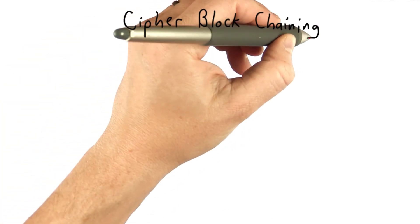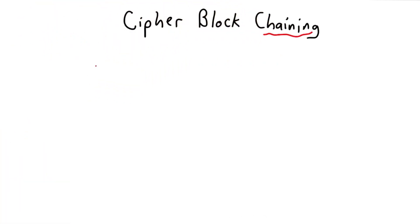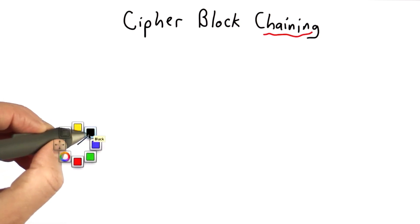One way to avoid some of those problems is to use cipher block chaining. The idea here is that we use the cipher text from the previous block to impact the next block. So here's what this looks like.